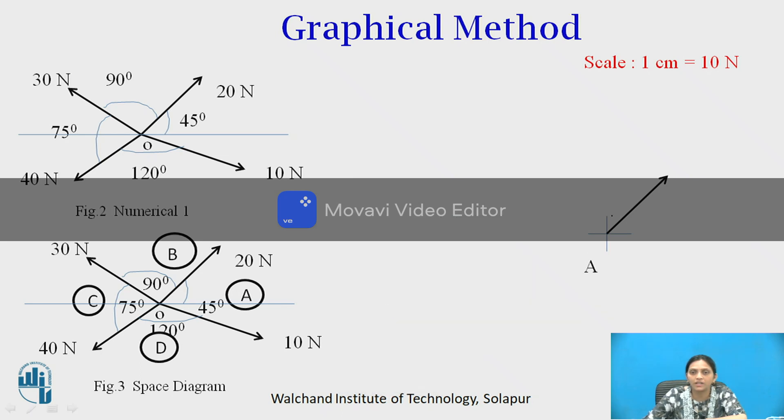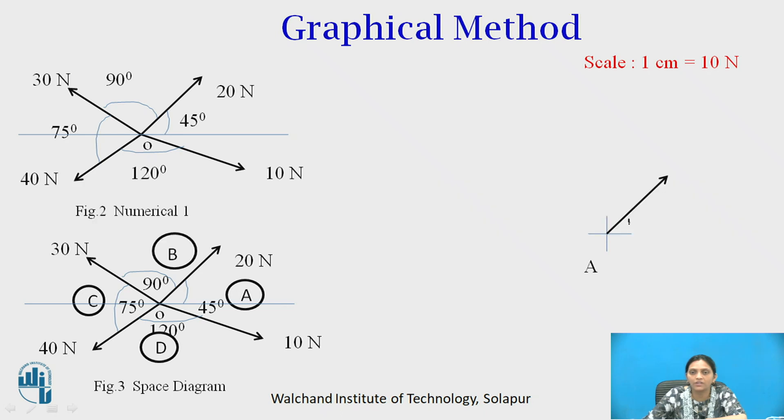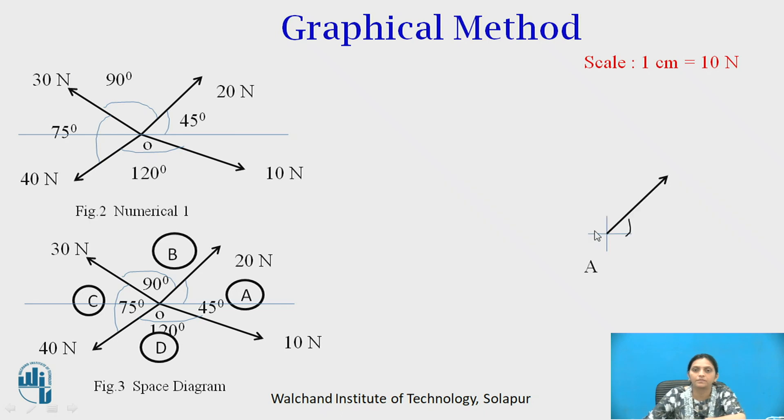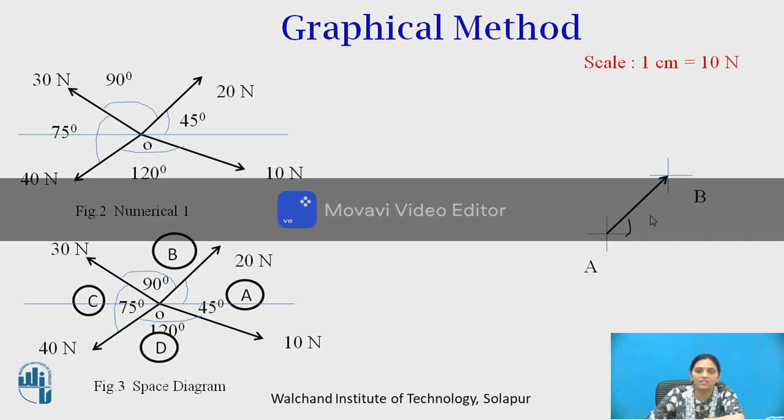Here either you can take this angle, given angle 45 degrees, you measure it with protractor 45 degrees, or directly draw parallel line to the 20 Newton force of space diagram and show here. So any one of the method you can use. So it starts from point A and it ends at point B. So this line between A and B is 2 centimeters and it is indicating 20 Newton force acting from A to B.